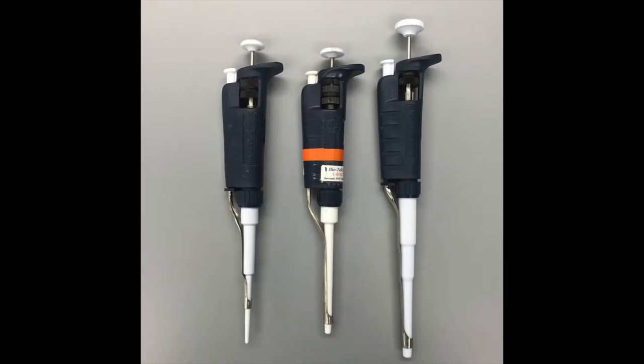First, we will start by explaining the parts of the instrument. This is the control button used for drawing up and ejecting the liquid. The volume adjustment allows you to specify how much liquid you want to draw. The ejector is used to remove the tip when you are finished. We will demonstrate this later in the video.